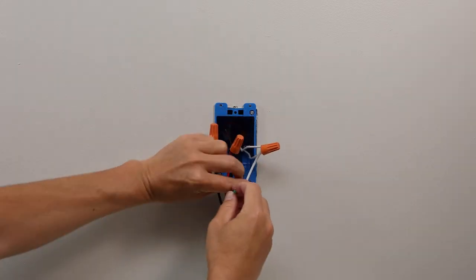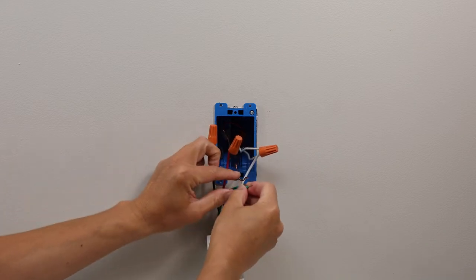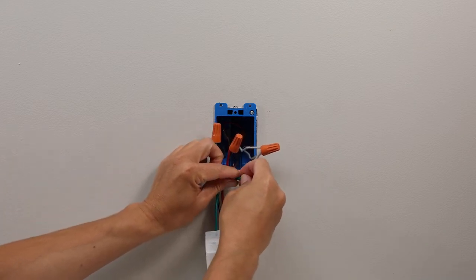Finally, use a wire nut to connect the green wire from the switch to the bare copper or green ground wire in the wall.